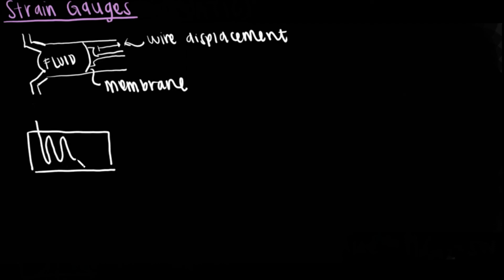As fluid comes into contact with the membrane, it displaces the membrane and causes the strain gauge wire to elongate, changing the resistance.